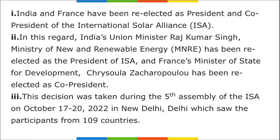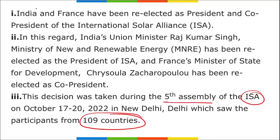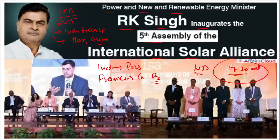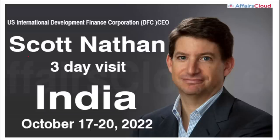Around 109 countries took part in the fifth edition assembly of the International Solar Alliance. India is the president and France is the co-president. The Director General of the International Solar Alliance is Ajay Mathur, and the headquarter is in Gurugram, Haryana.